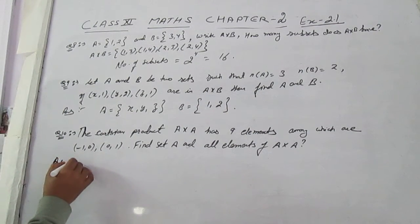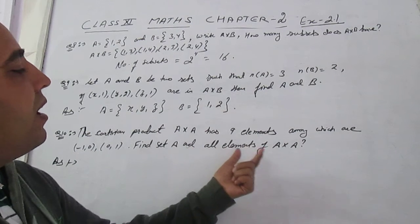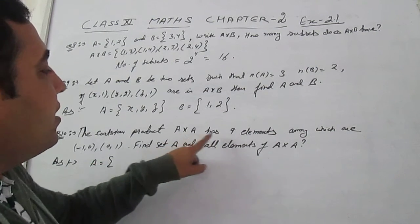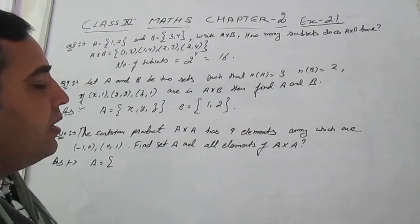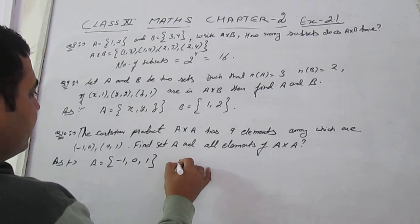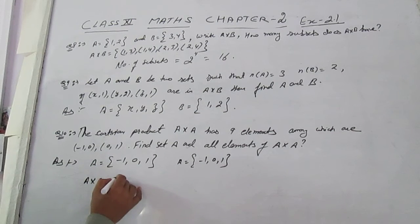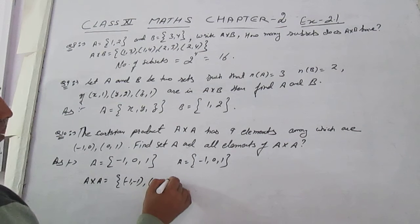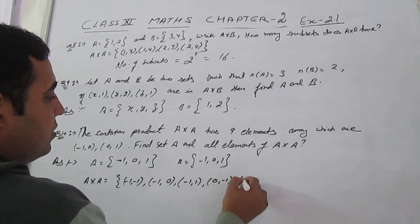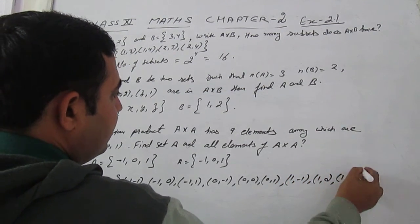Question 10: The Cartesian product A×A has nine elements, among which are (−1,0) and (0,1). Find set A and all elements of A×A. Since A×A has 9 elements, n(A) = 3, so A = {−1, 0, 1}. Therefore A×A = {(−1,−1),(−1,0),(−1,1),(0,−1),(0,0),(0,1),(1,−1),(1,0),(1,1)}.